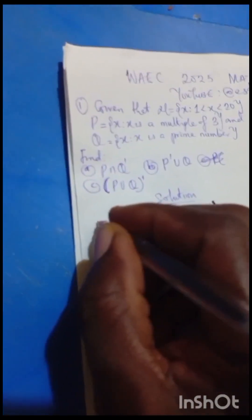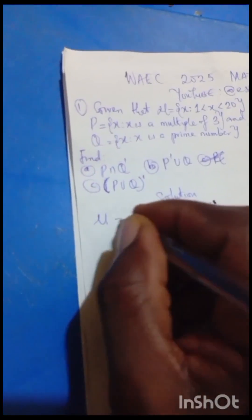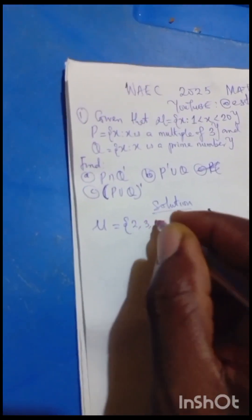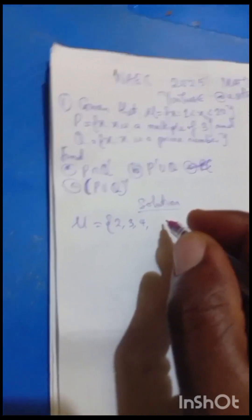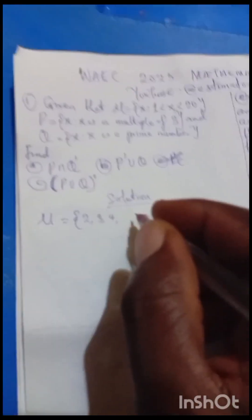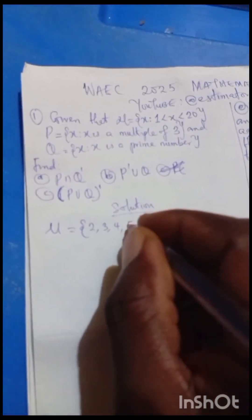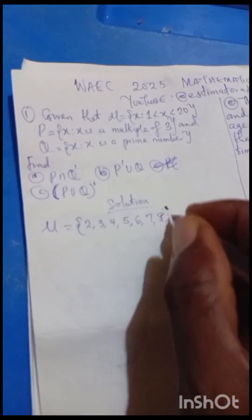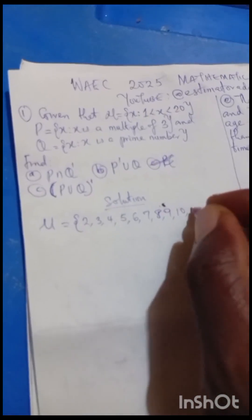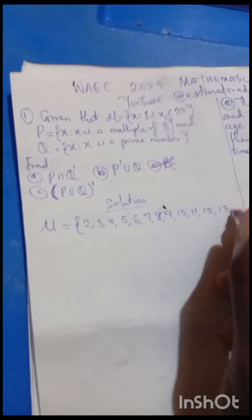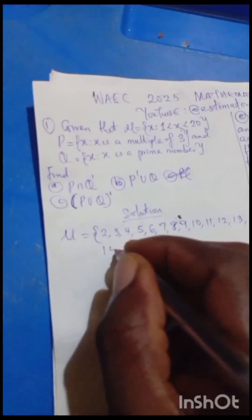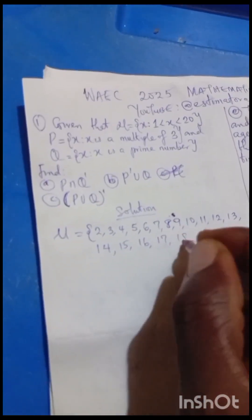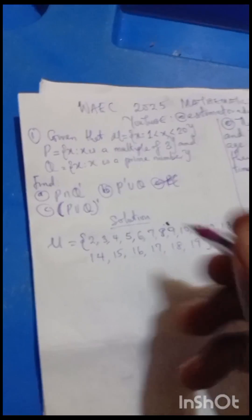Our universal set will be, since the numbers start from 2: {2, 3, 4, 5, 6, 7, 8, 9, 10, 11, 12, 13, 14, 15, 16, 17, 18, 19}. Because it said less than 20, we stop at 19. That is our universal set.